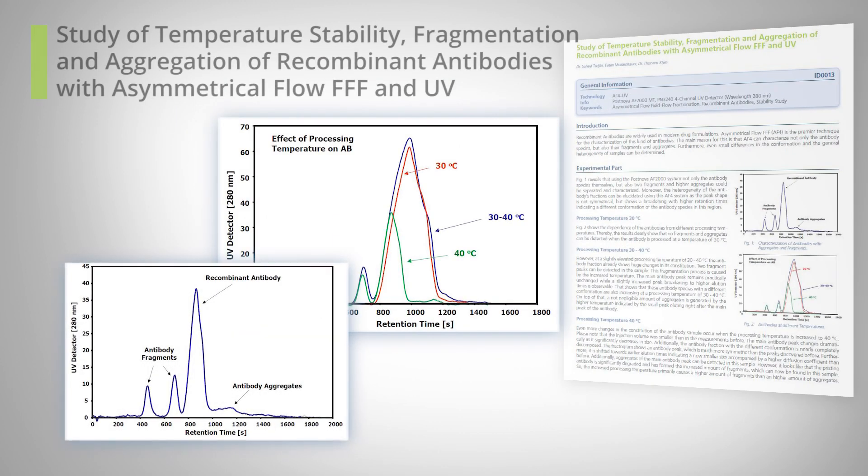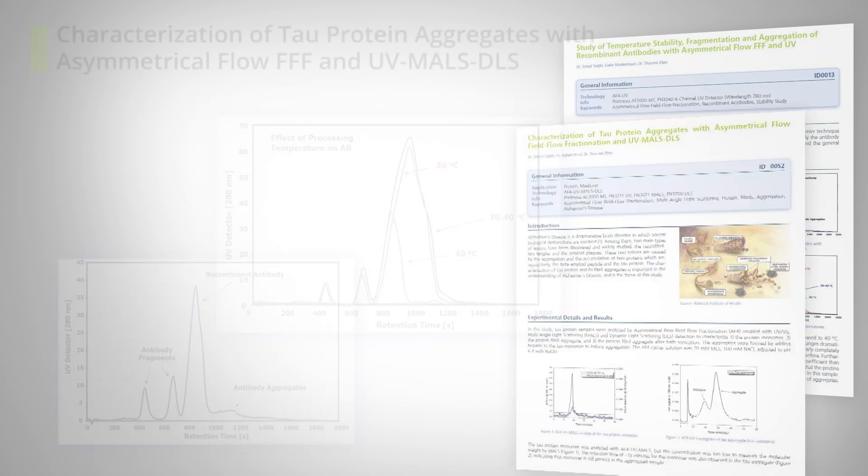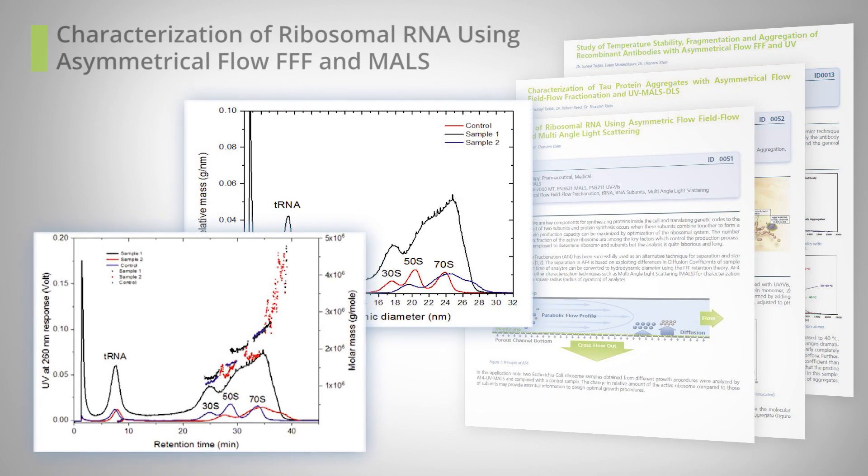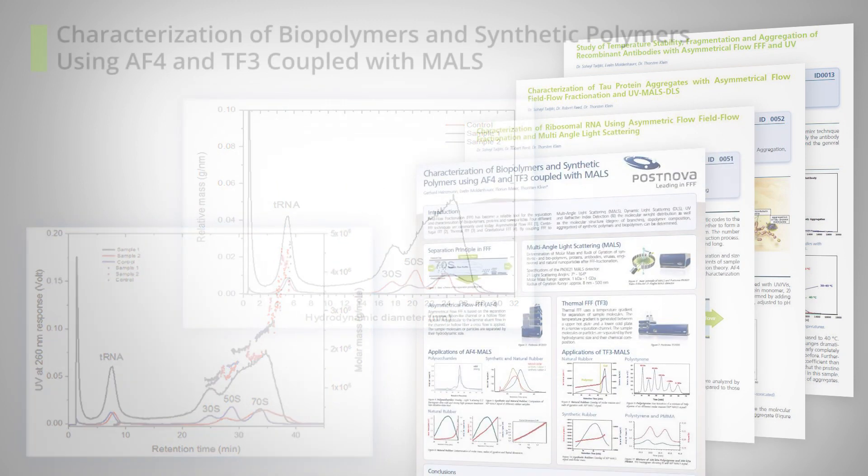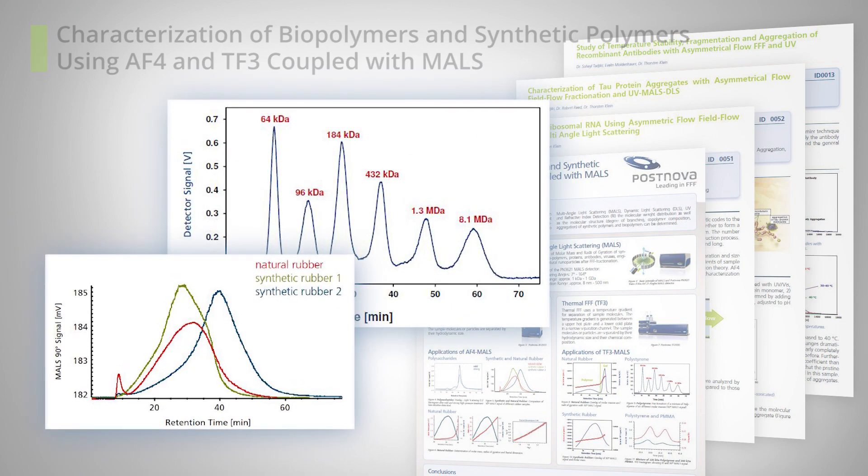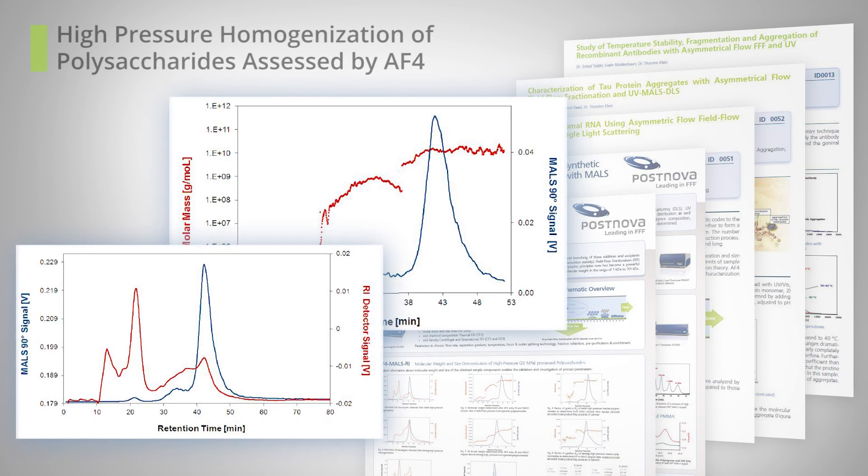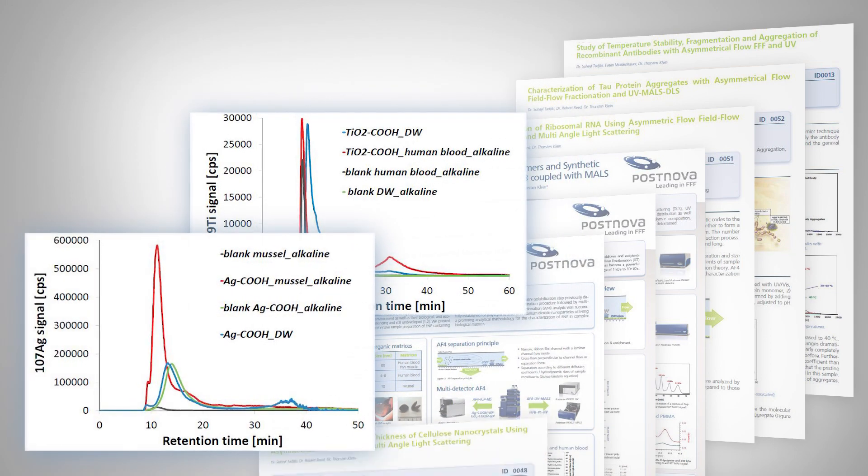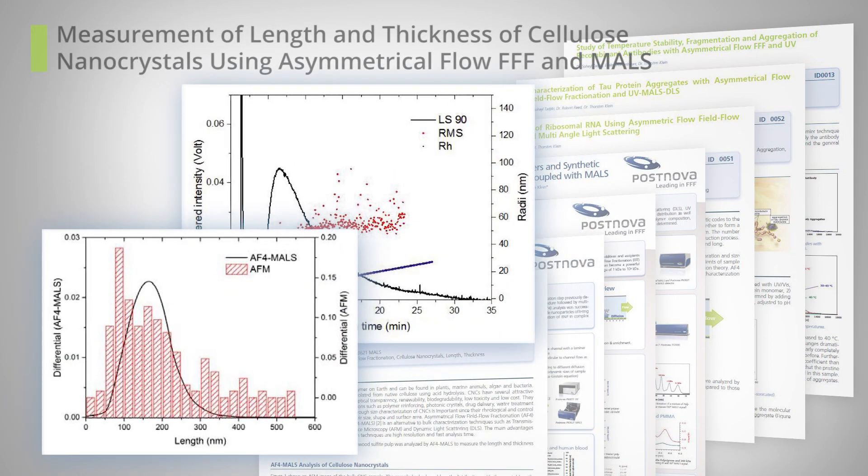The Postnova MALS is also the perfect detector for polymer and biopolymer analysis, giving access to molecular weight, size and structure. And for nanoparticle and vesicle analysis by FFF, the MALS can accurately measure the particle size distribution and help understand the structure.